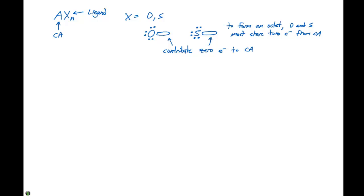Our next subset of compounds are also of the type AXN, where our ligand is going to be either oxygen or sulfur. Remember that oxygen and sulfur both have six valence electrons, so to form an octet, they must share two electrons from the central atom — contributing zero electrons to the bonding around the central atom. They can get away with this because they're both fairly electronegative.